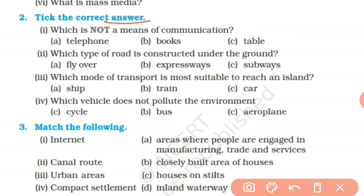Which of these is not a means of communication - telephone, books, or table? Telephone is a means of communication. Books are also a means of communication - the author writes their thoughts and feelings, and through the book those reach others. We purchase and read the book and feelings are shared. Table is not a means of communication.